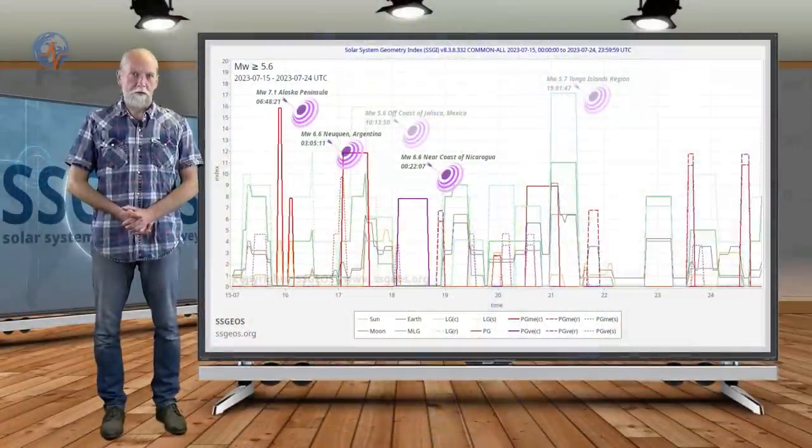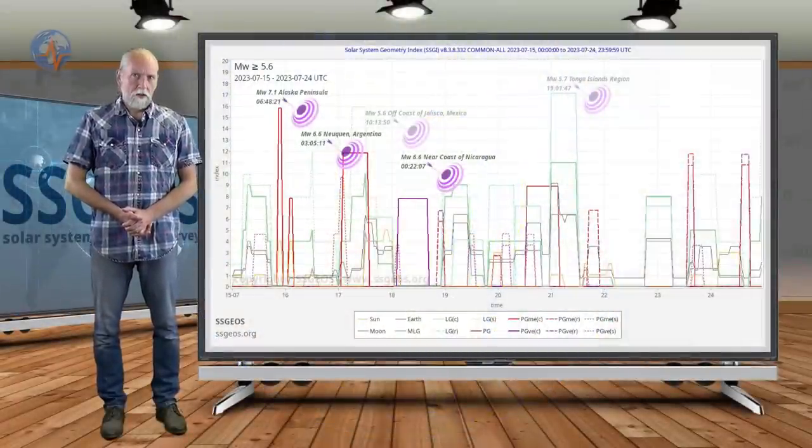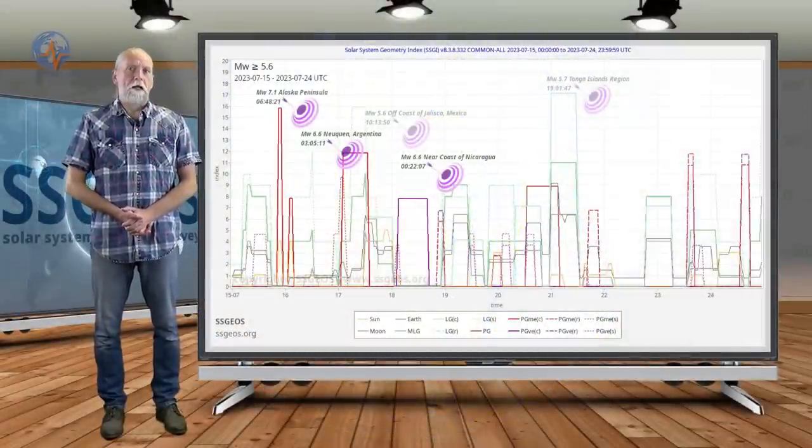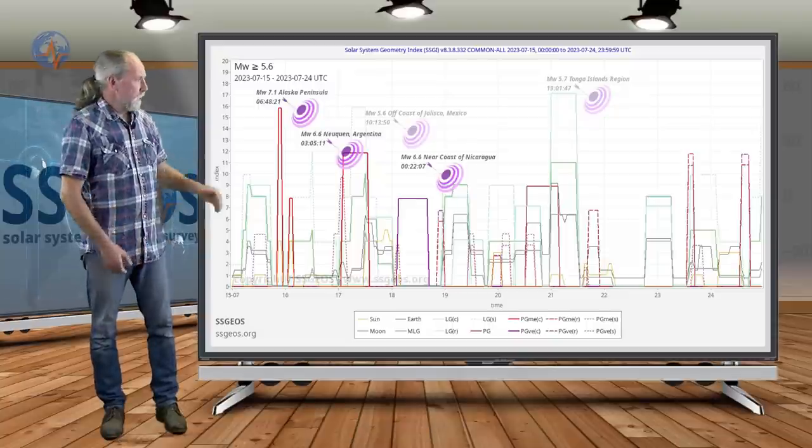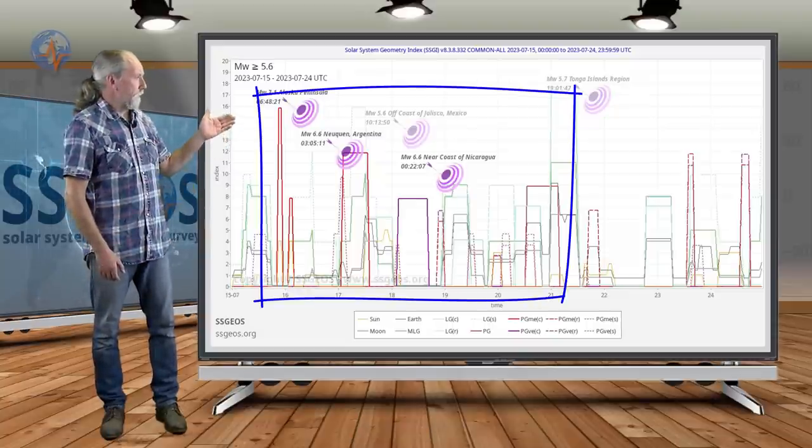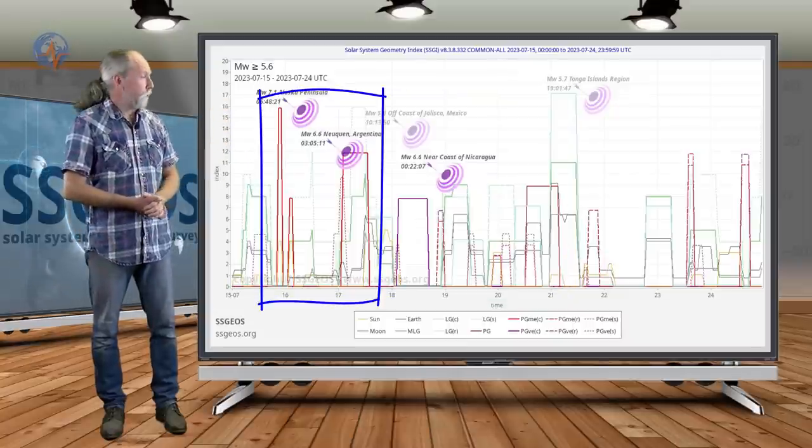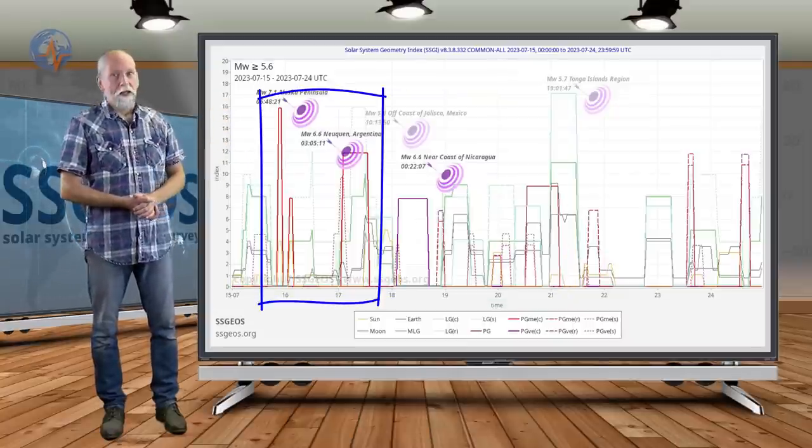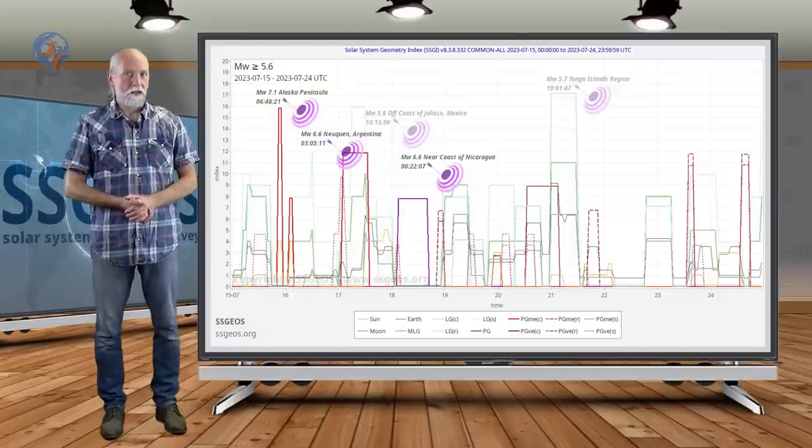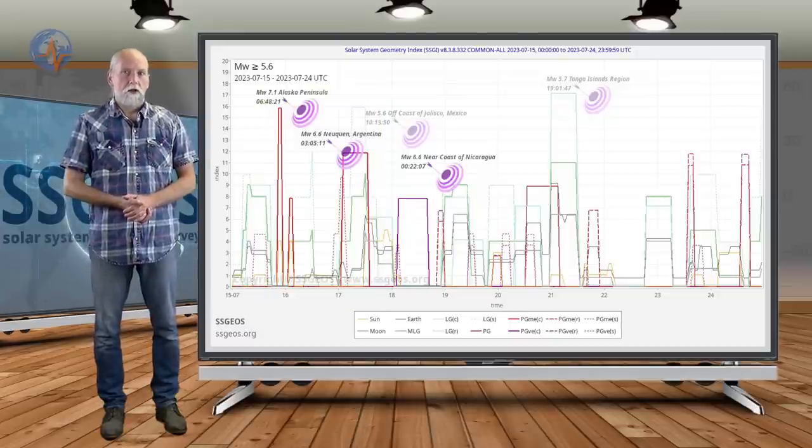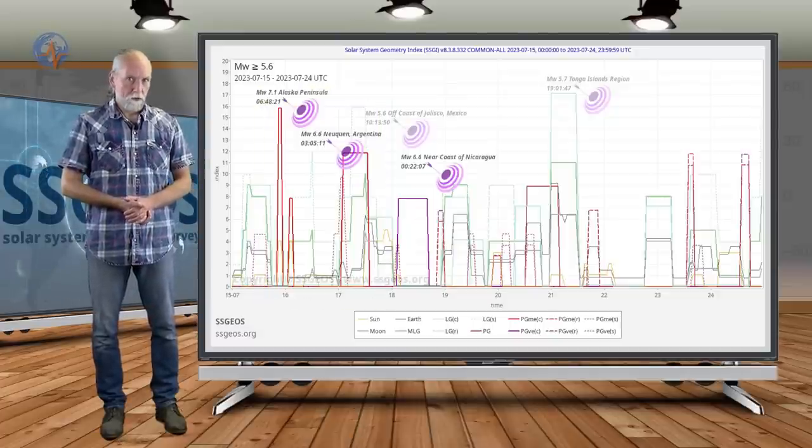Welcome to a new planetary and seismic update. The critical planetary geometry that I discussed in the previous update was from the 15th through the 20th, but we had a convergence early on the 16th and 17th. As you can see, we had strong and even major seismic activity very much coinciding with that geometry.